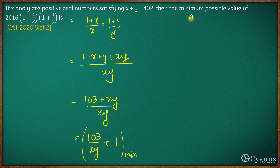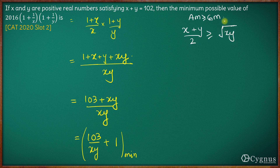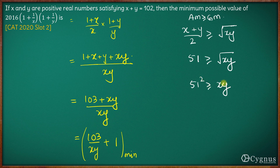Using the AM-GM rule, for the two terms x and y, we have (x plus y)/2 is greater than or equal to the square root of x times y. Since x plus y is 102, we get 51 is greater than or equal to root of xy. Squaring both sides, 51 squared is greater than or equal to xy.